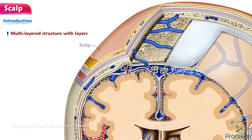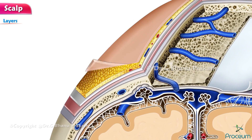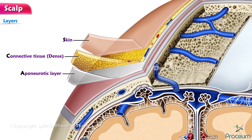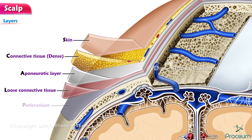The scalp is a multilayered structure with layers that can be defined by the word itself: S for skin, C for connective tissue which is dense, A for aponeurotic layer, L for loose connective tissue, and P for pericranium.